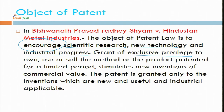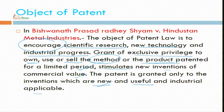The grant of exclusive privilege to own, use, and sell the method or product patented — both process and product — must be for a limited period. It stimulates new inventions of commercial value. The patent is granted only for inventions which are new, useful, and industrially applicable. The main focus is on how to incentivize the inventor; if there is no reward, if there is no monopoly right, no one will be ready to do that hard work. This is one theory — the labor theory given by John Locke.